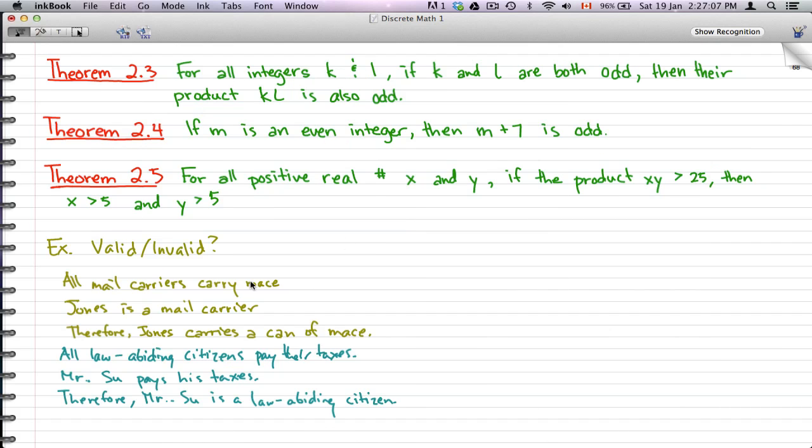So there are three more statements after that. For all integers k plus l, if k and l are both odd, then their product k times l is also odd. And if m is an even integer, then m plus 7 is odd. For all positive real numbers x and y, if the product xy is greater than 25, then x is greater than 5 and y is greater than 5.